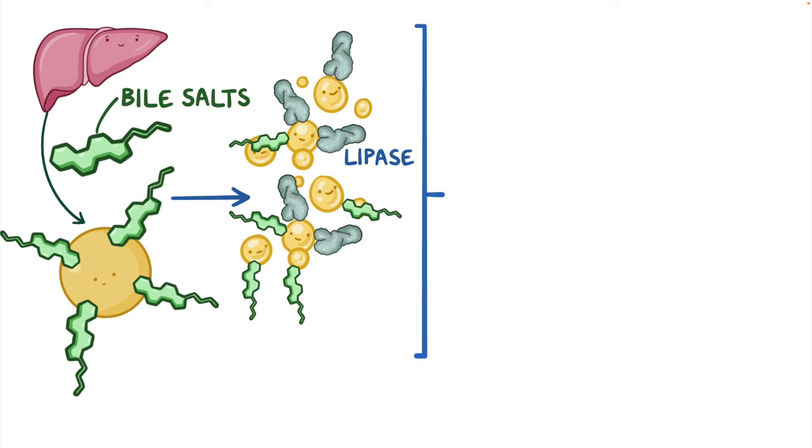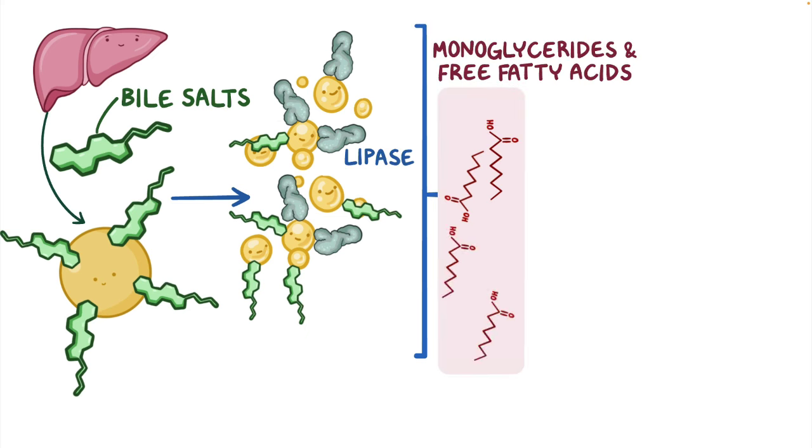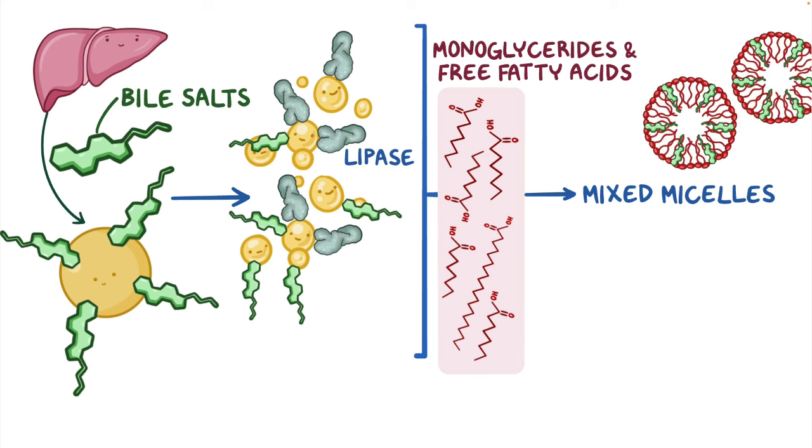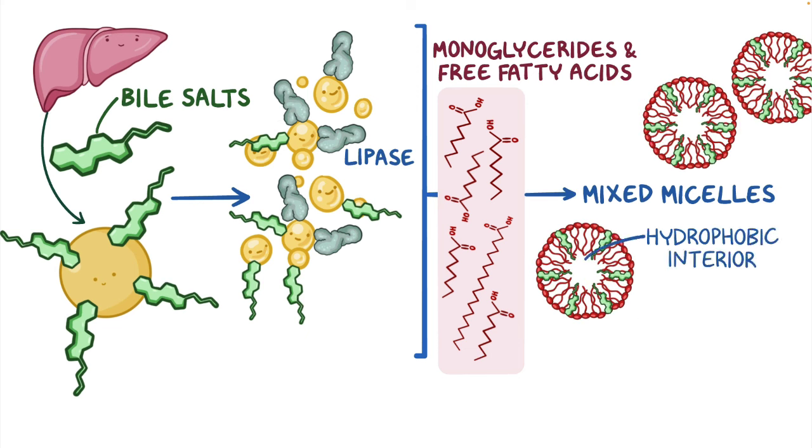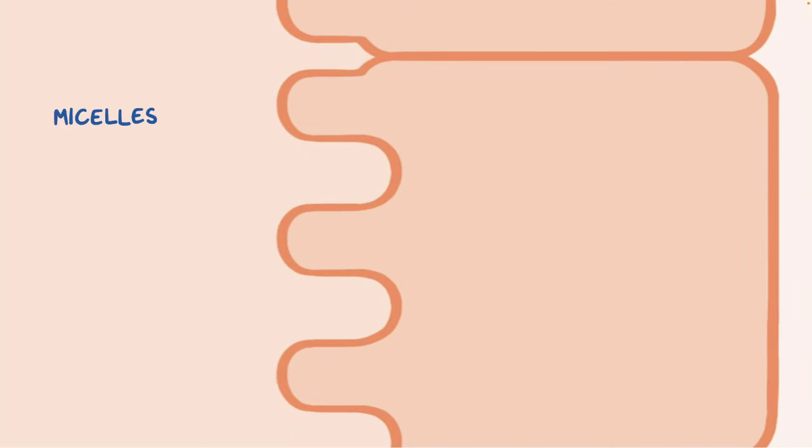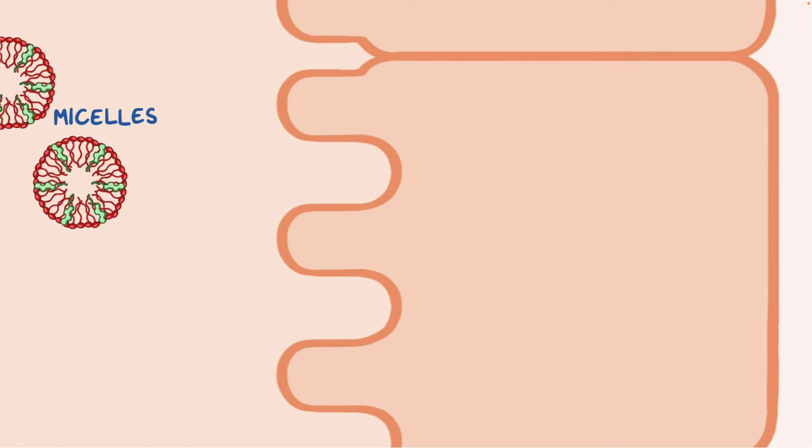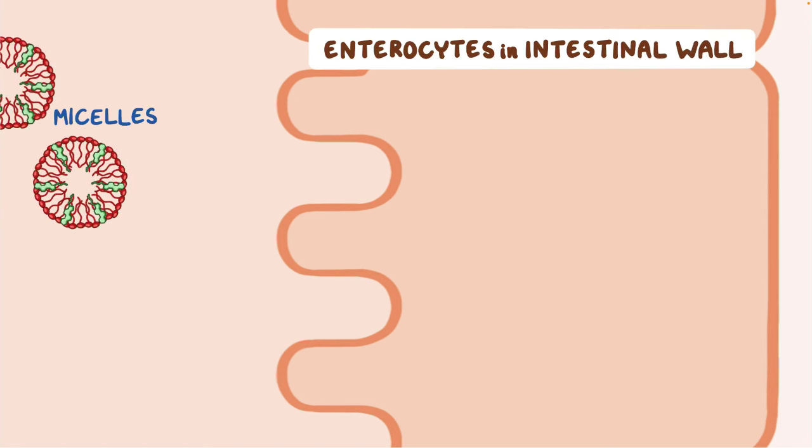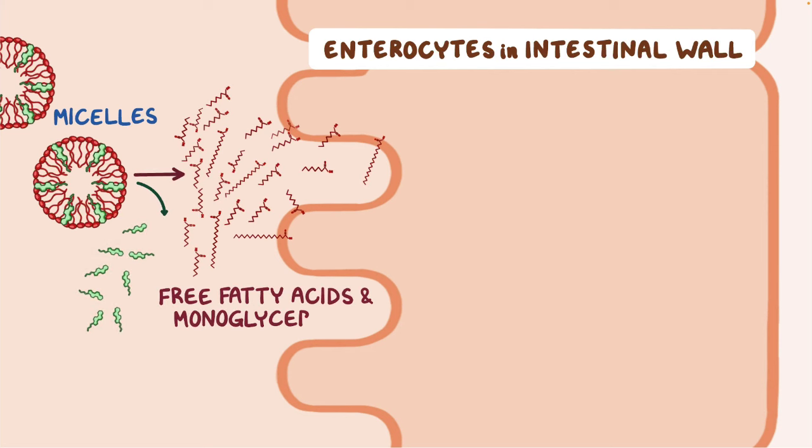Once the triglycerides are broken down into monoglycerides and free fatty acids, these self-assemble into mixed micelles, which have a hydrophobic interior and a hydrophilic exterior. The micelles glide through the watery environment of the intestinal lumen and reach the enterocytes in the intestinal wall. When they get to the enterocytes, the micelles release the fatty acids and monoglycerides, which diffuse into the enterocyte.